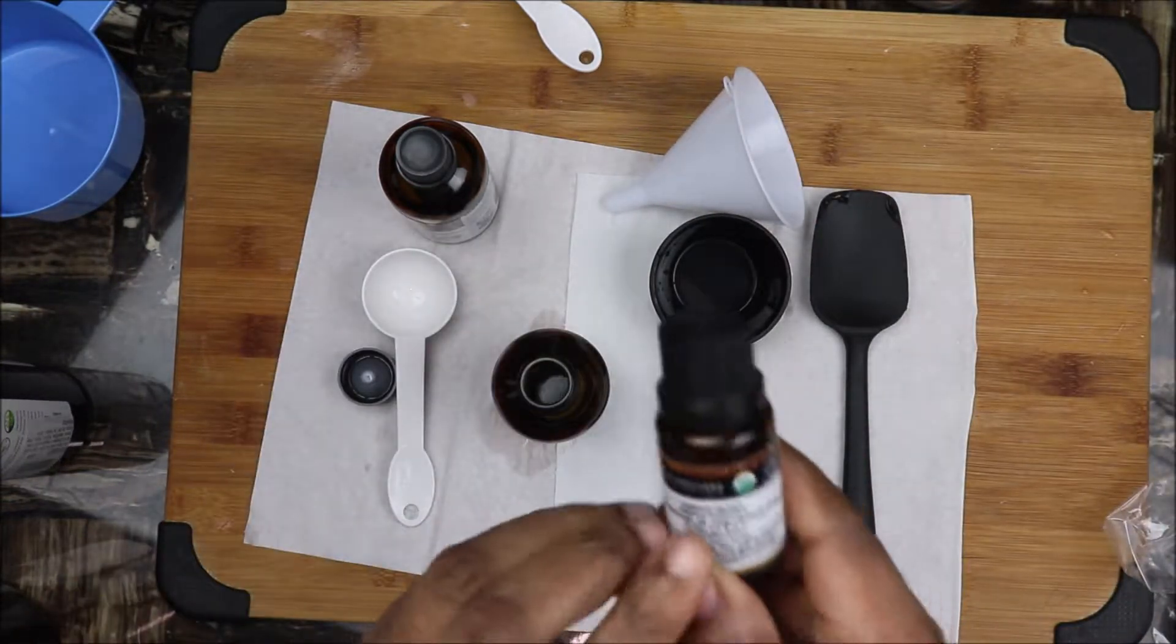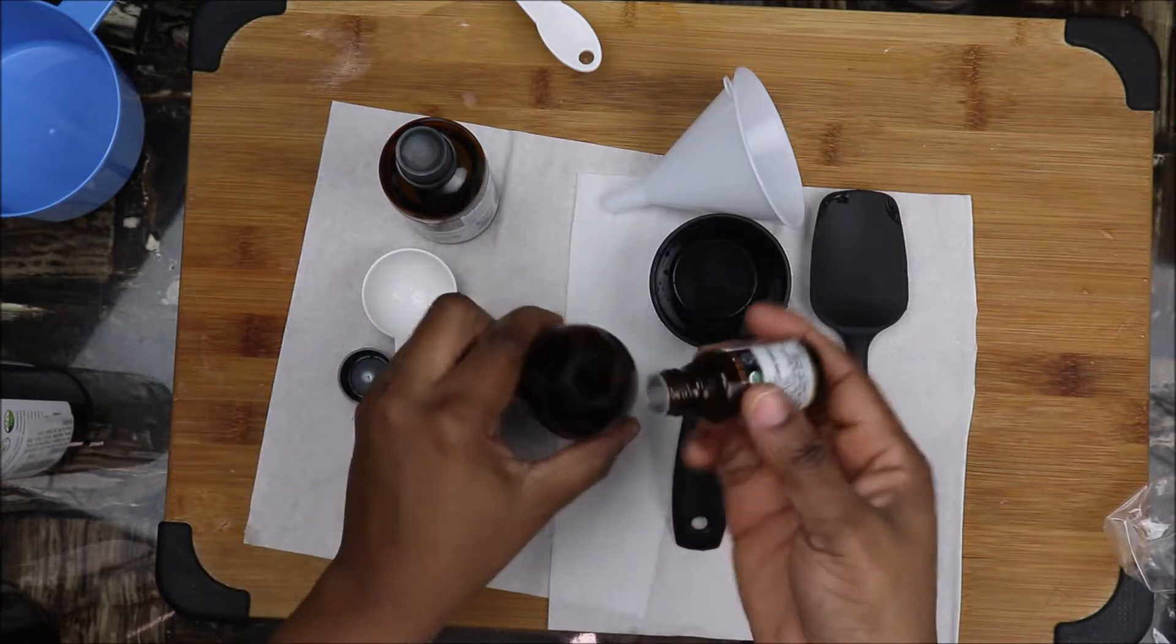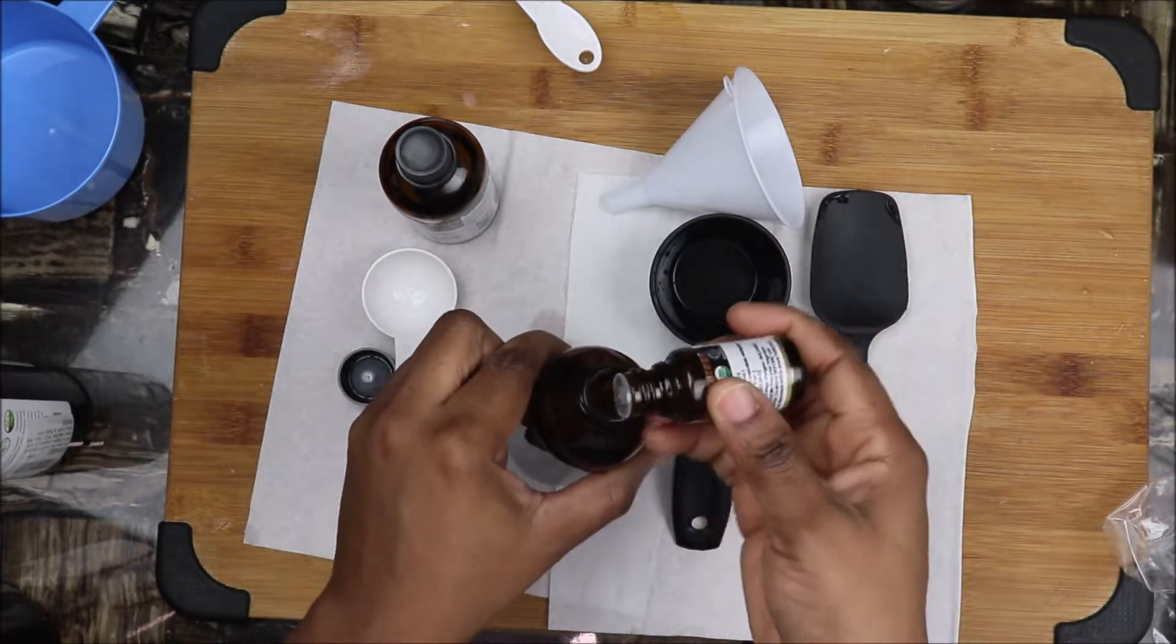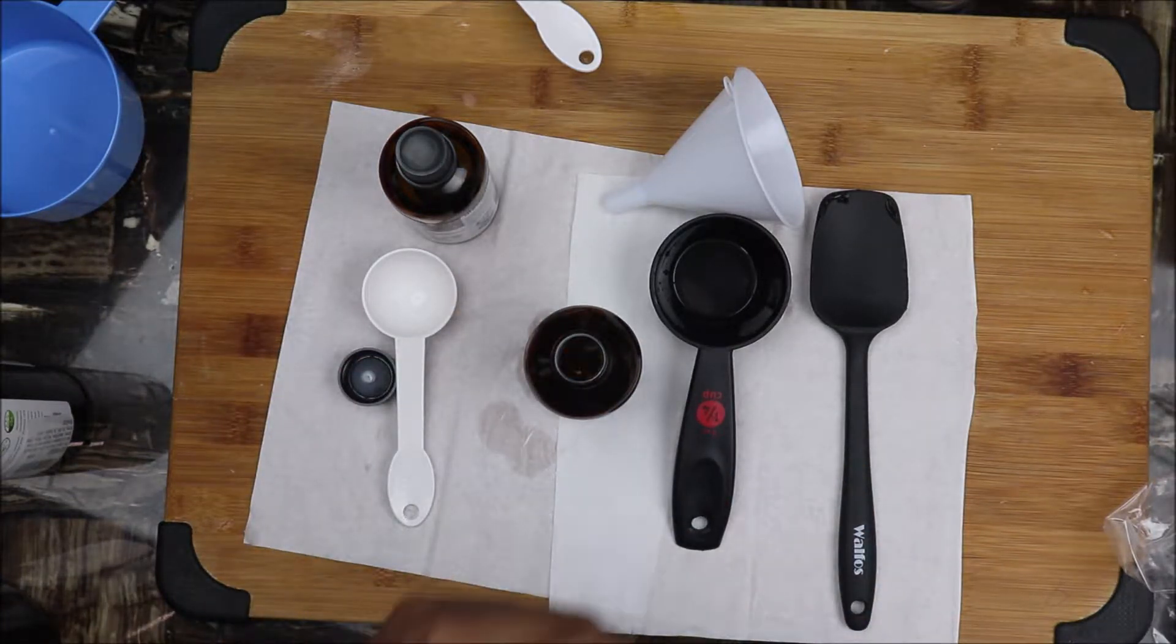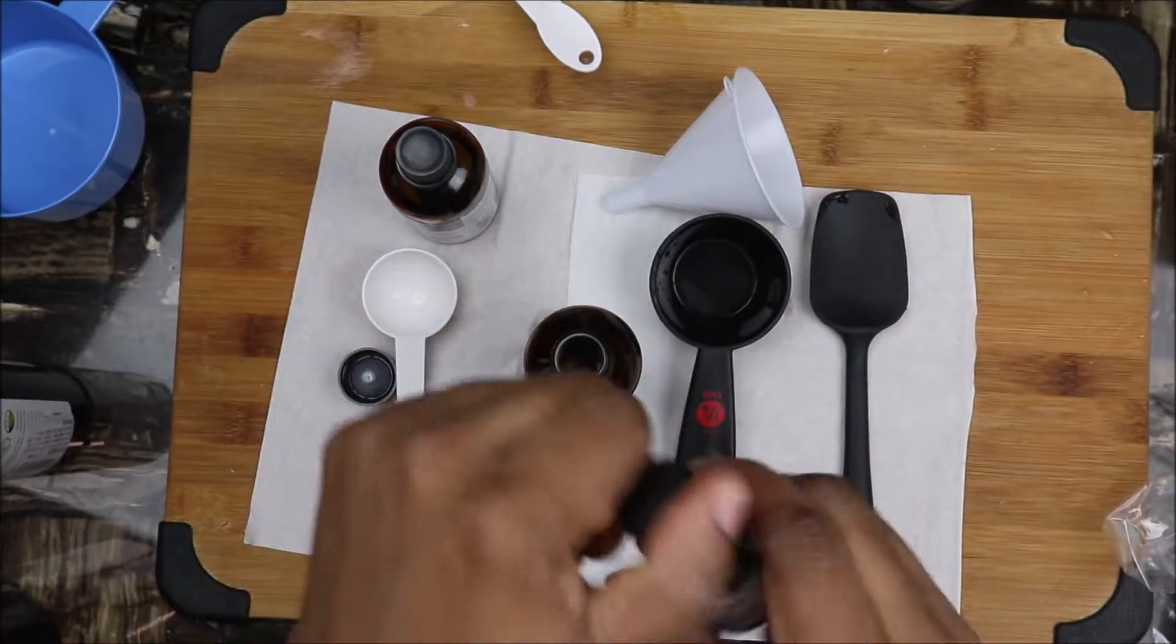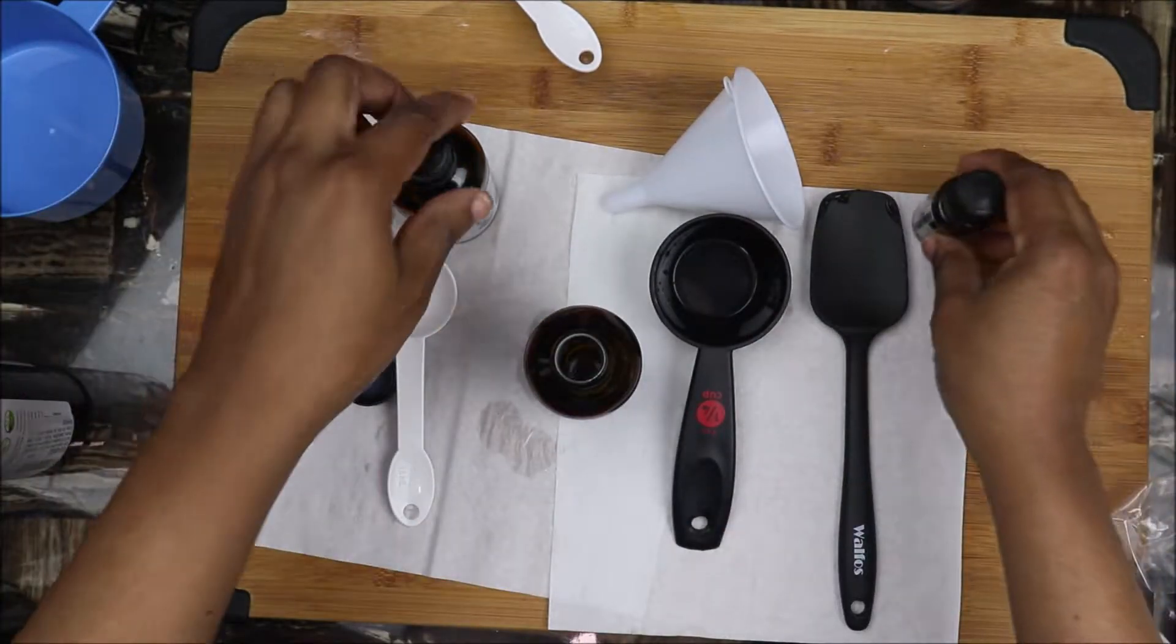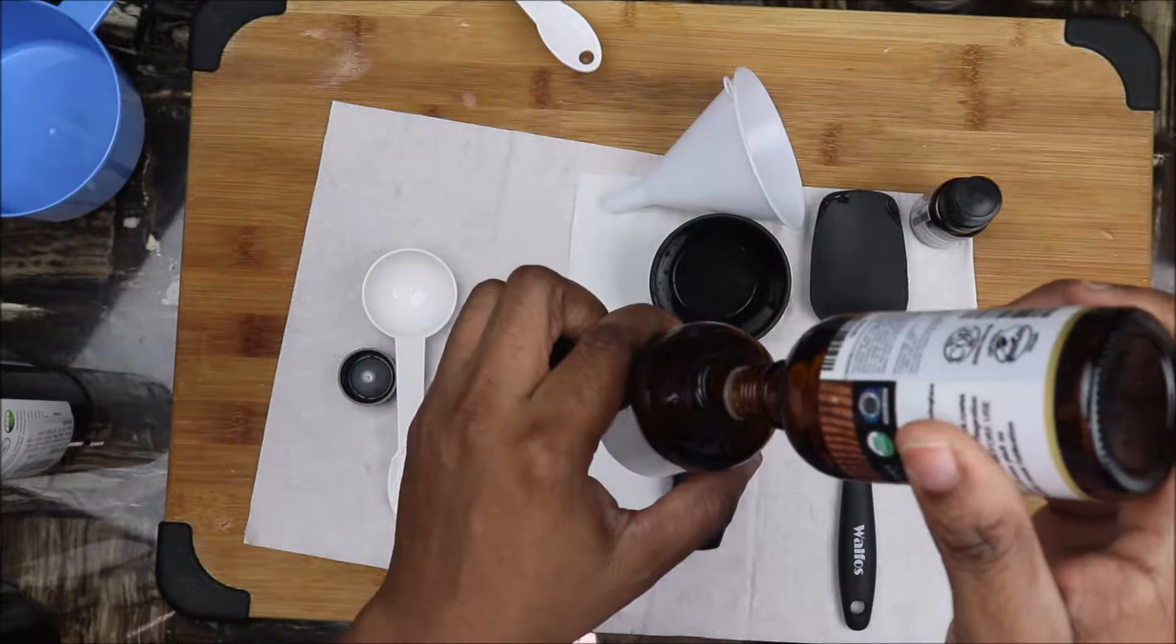Then I'm going to add two drops of juniper berry essential oil. Juniper berry essential oil is available at all naturalized stores. Then two drops of lavender essential oil.